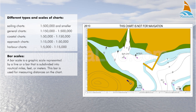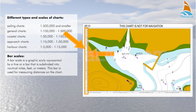Bar scales. A bar scale is a graphic scale represented by a line or a bar that is subdivided into nautical miles, feet or metres. This bar is used for measuring distances on the chart.